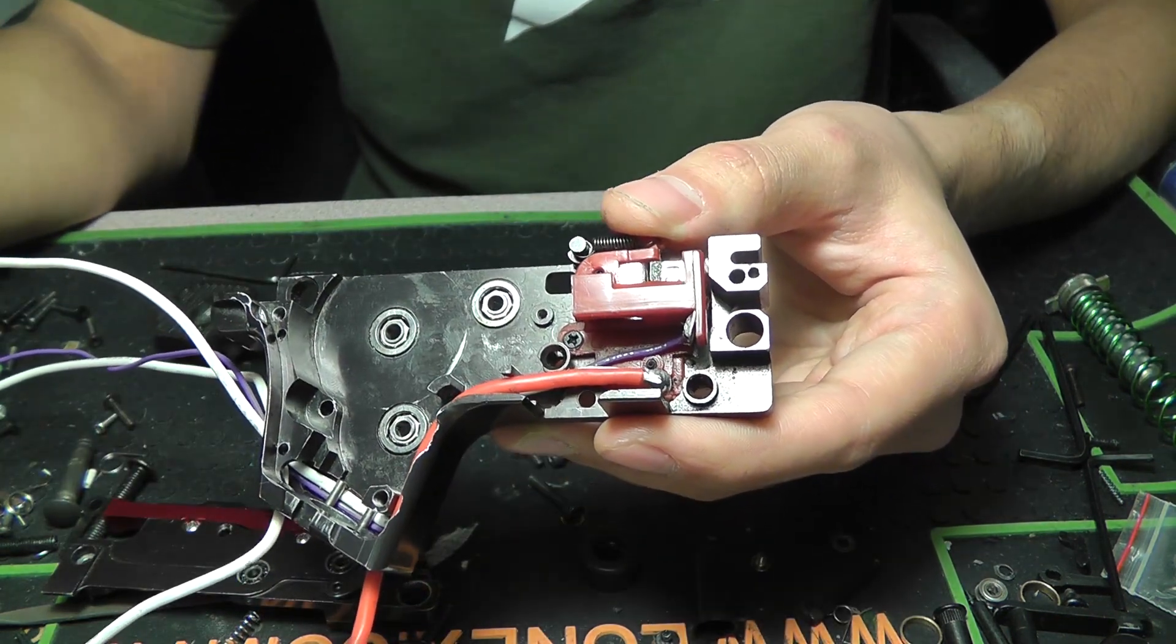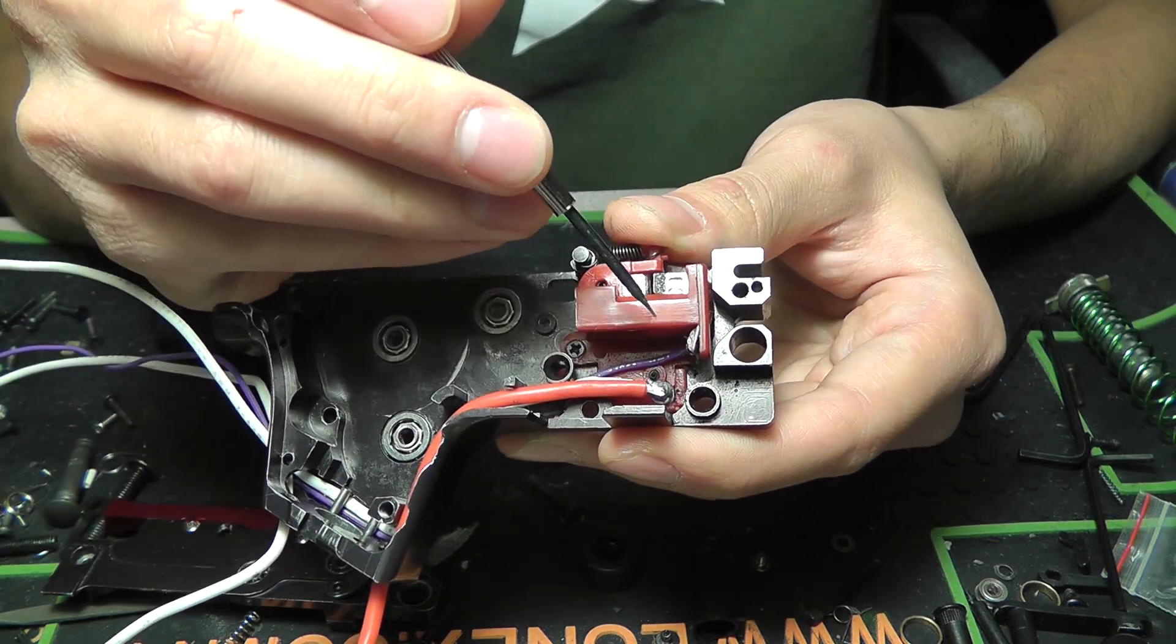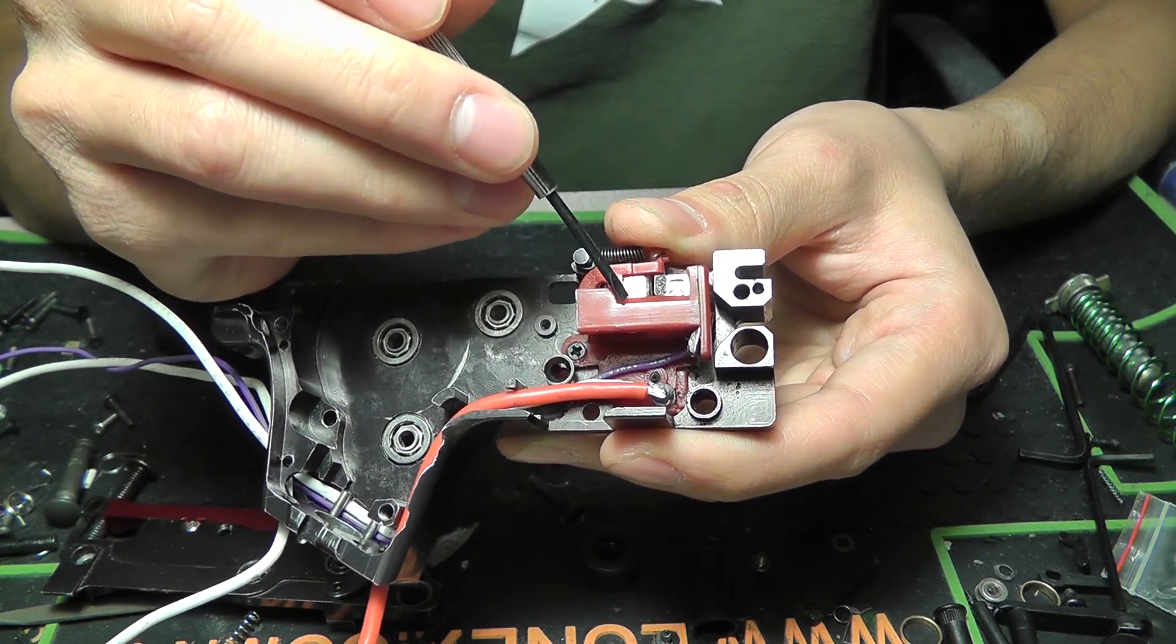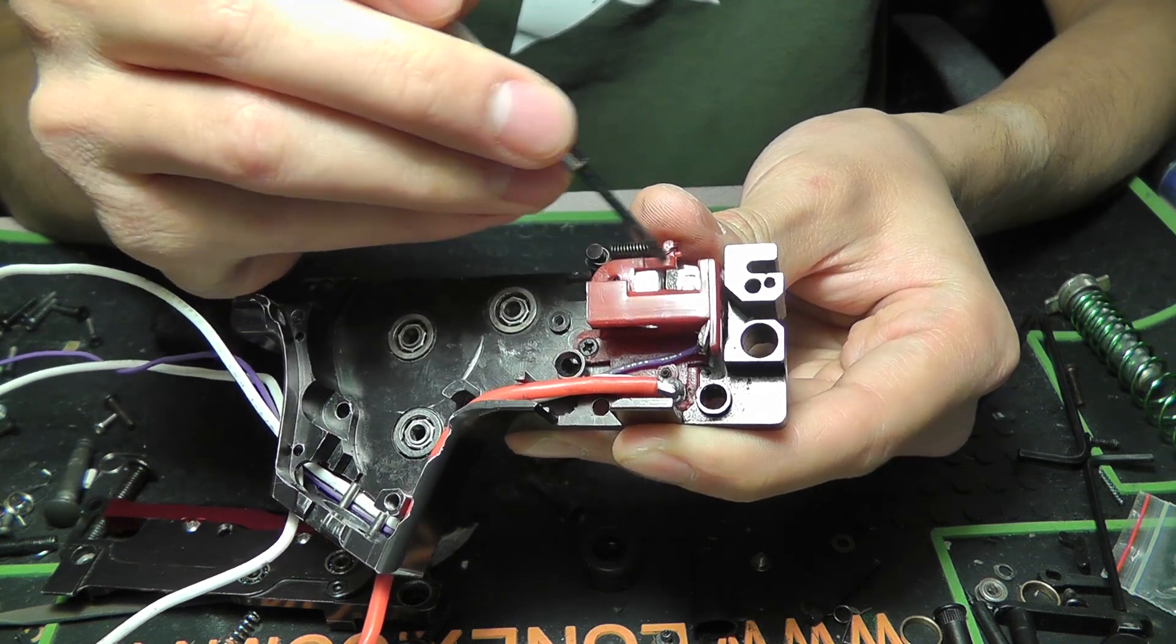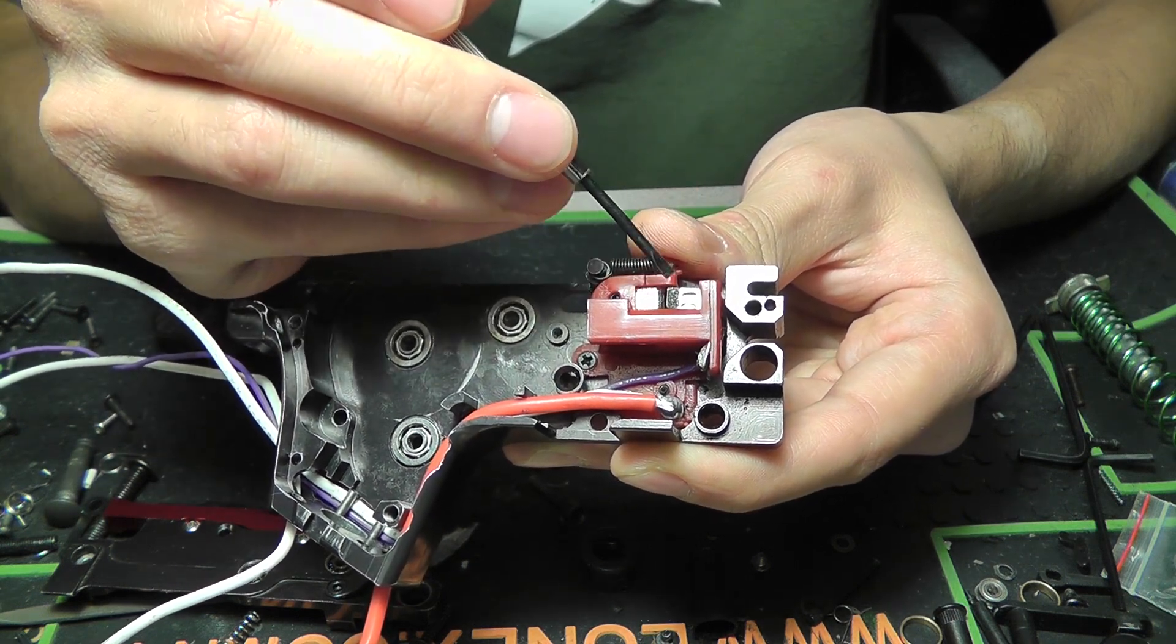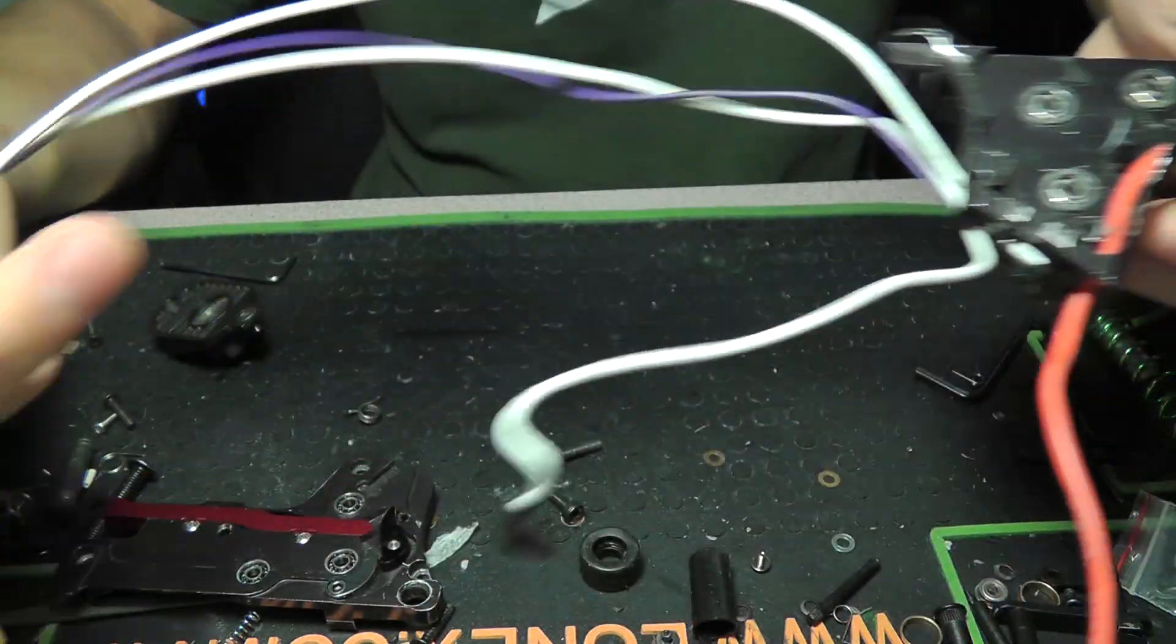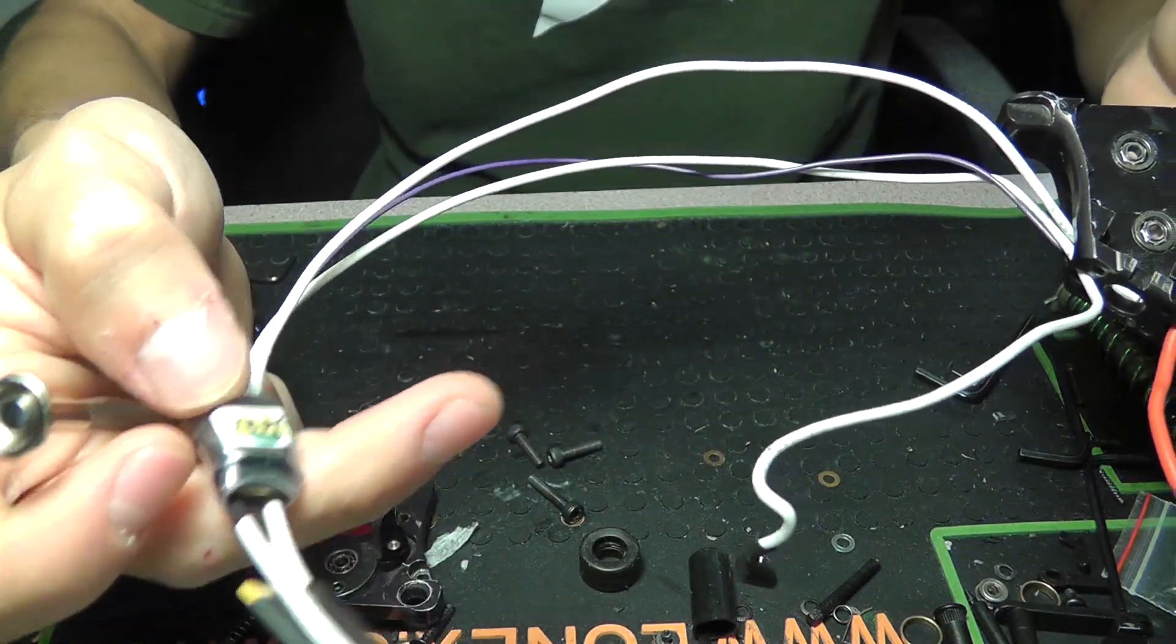The MOSFET - what that does is, instead of these being the main conduit of energy, this is now just a signal. The energy is being passed straight from the battery to the motor.